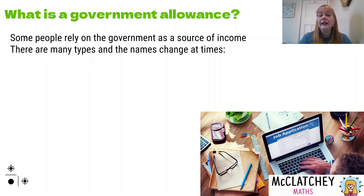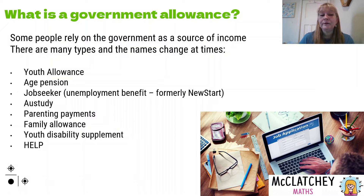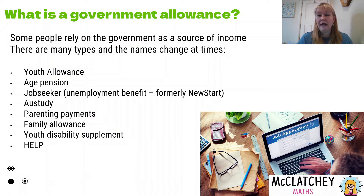There are lots of different kinds and the names do change depending on which politician is currently the prime minister. These are just some of the most common ones you'll probably see in your textbooks. We've got the youth allowance — we're going to use our worked example on the youth allowance today. The age pension is available to people over a certain age who have retired and are no longer working. We also have something called JobSeeker, which is an unemployment benefit.